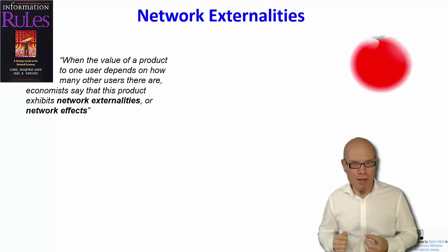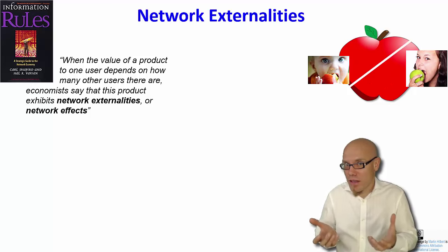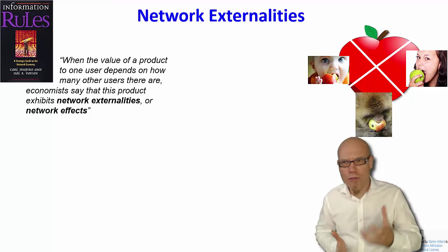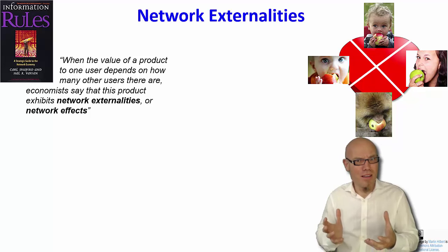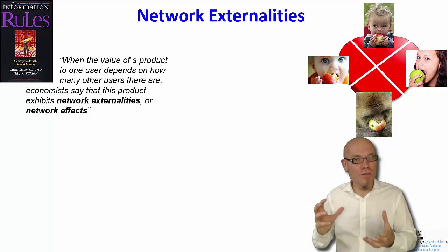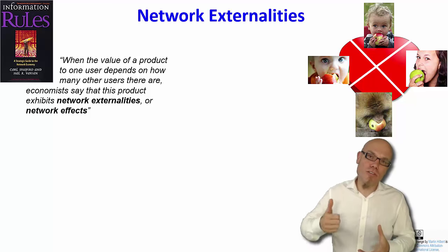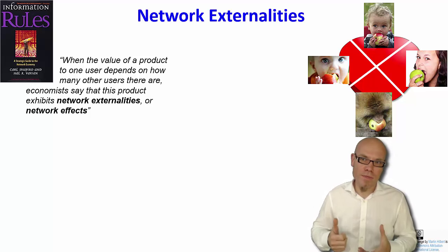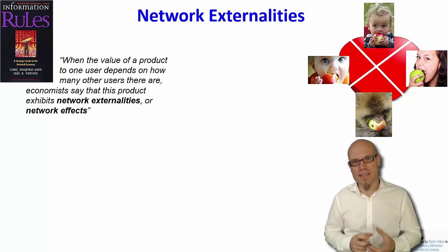So for example, you have an apple and you have to share the apple. Less apple is left for everybody involved. Then you have three or four people trying to have a bite of the apple — there's even less left over for everybody. So the value of the product decreases with the number of people that use it. These are negative network externalities.